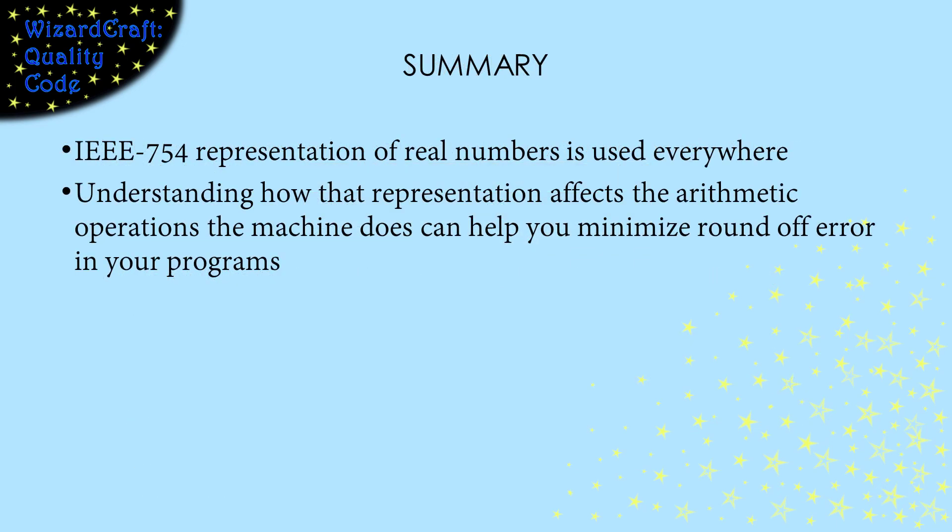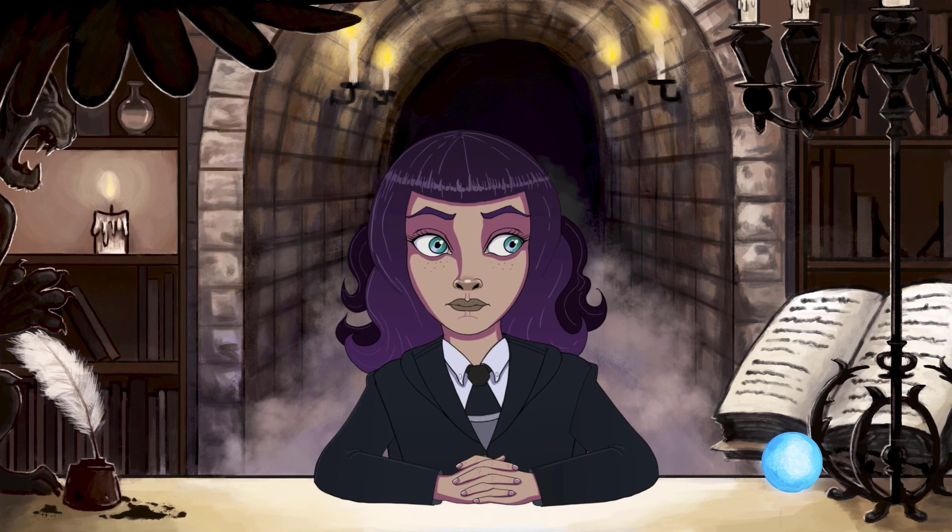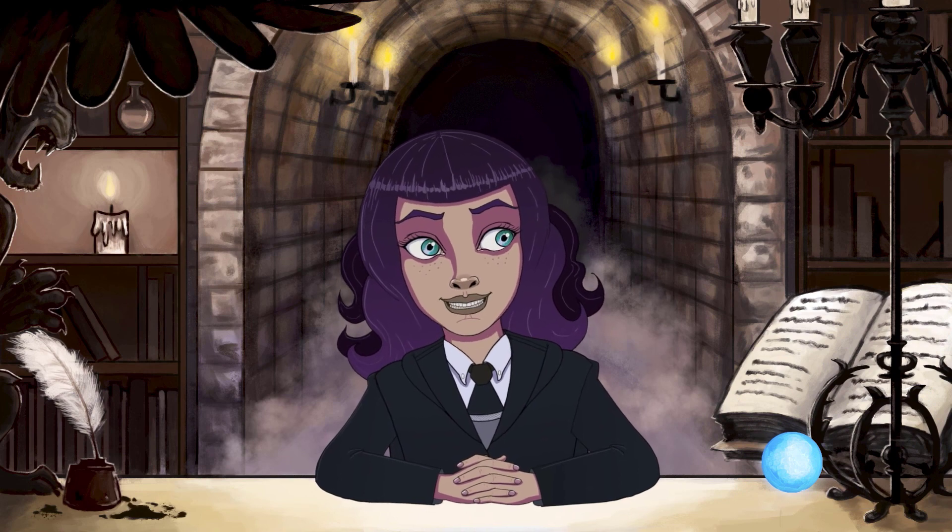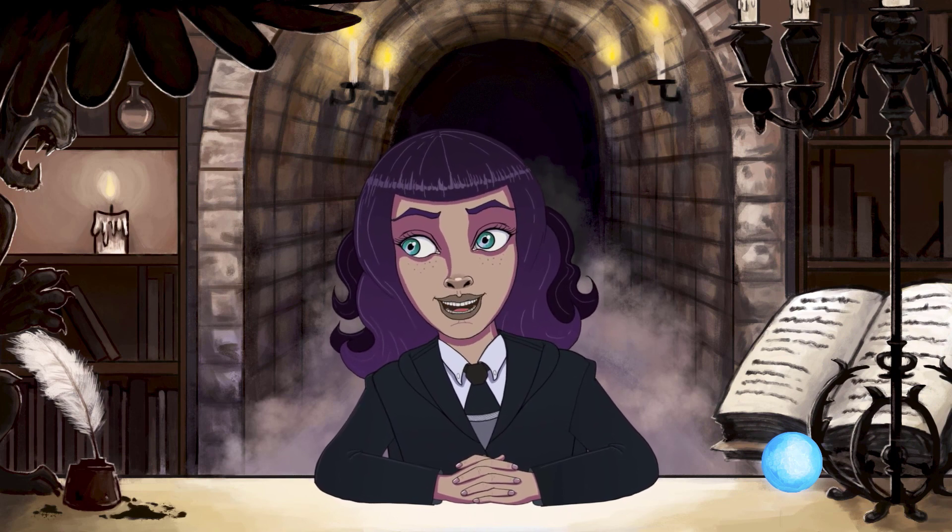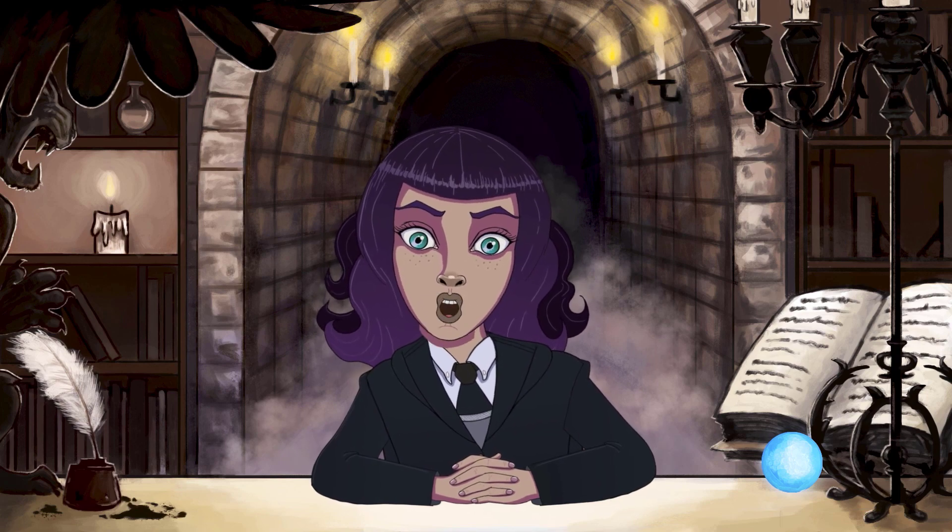I hope this video helped you understand IEEE 754 floating points better. Even if you aren't a computer engineer who cares about the bits, knowing how the representation affects the way the machine does the math can help you write better code with less round-off error in its real number calculations. Think about addition. What happens to the mantissa of the second number if the exponents are really different? Maybe Merlin ought to make a video about that.